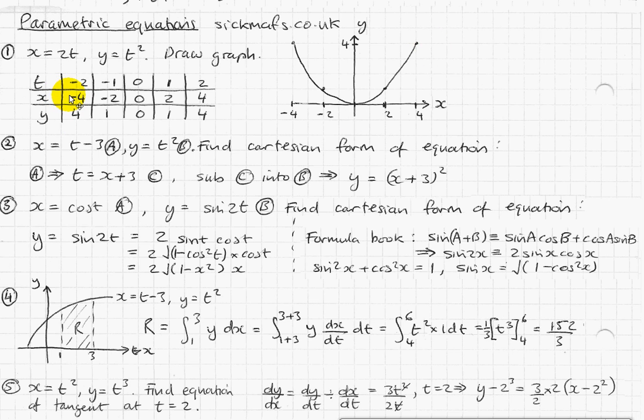So if t equals minus 2, then x equals 2 times minus 2, which is minus 4. And at the same time, for that same value of t, y is going to equal minus 2 squared, which is 4. And that gives you a coordinate pair: minus 4, 4. And you can plot them like that and draw your graph.